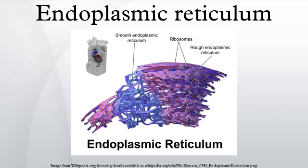The smooth endoplasmic reticulum has functions in several metabolic processes. It synthesizes lipids, phospholipids, and steroids. Cells which secrete these products, such as those in the testes, ovaries, and skin oil glands, have a great deal of smooth endoplasmic reticulum. It also carries out the metabolism of carbohydrates, drug detoxification, attachment of receptors on cell membrane proteins, and steroid metabolism.